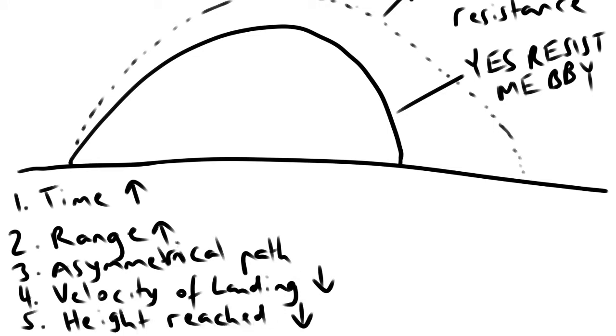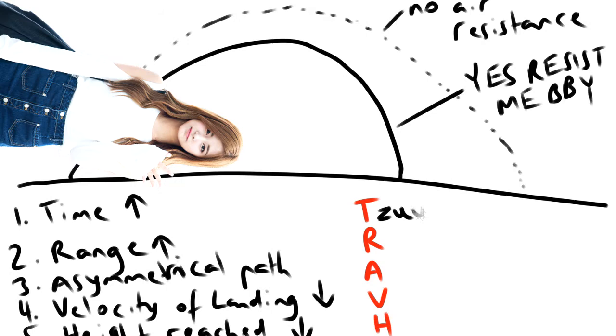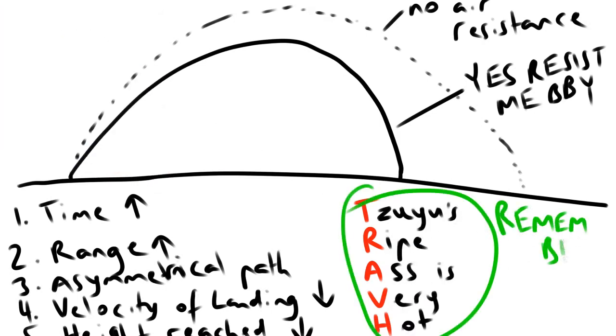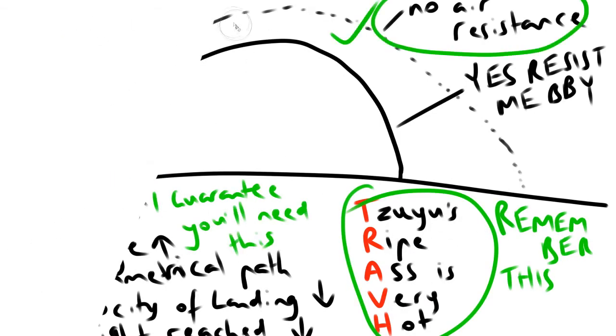A mnemonic to remember these by is: Zuyu's ripe ass is very hot. However, WACE is easy, so we ignore air resistance.